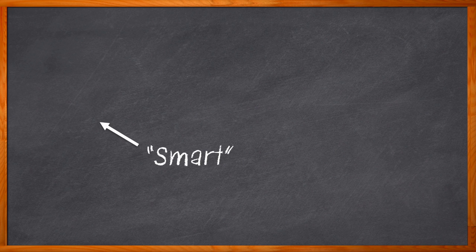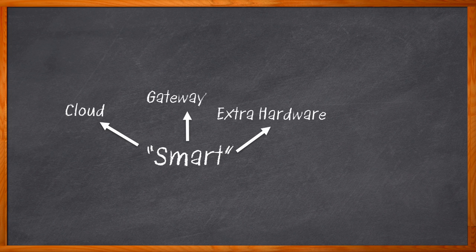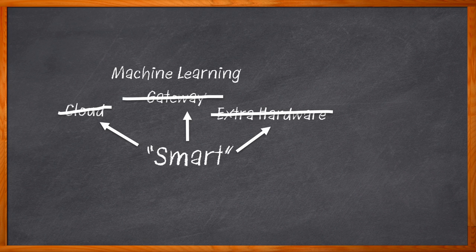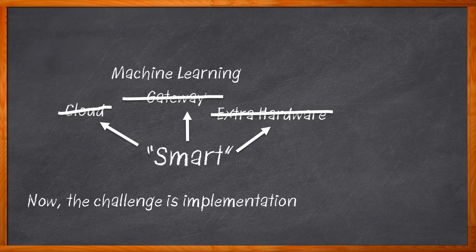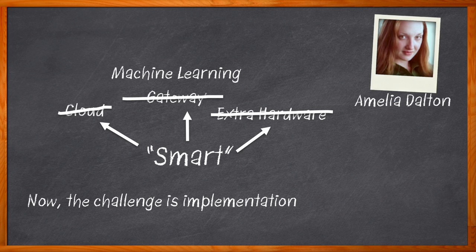Isn't it amazing how much the definition of the term "smart device" has changed in just the last decade? The idea of what a device is and what it can do has evolved greatly, and now machine learning is changing all of that. No longer is the cloud required, or extra hardware, or an additional gateway needed to make our devices smart. But how we implement machine learning into our smart devices — whether consumer applications or IoT designs — can be a big hurdle to overcome.